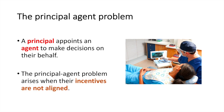The principal-agent problem arises when the agent has differing incentives to the principal. If you visit the dentist, you may want them to take care of your teeth at the lowest price possible, but the dentist has an incentive to earn revenue and make more than the minimum from you. This does not mean that every dentist is out to take your money, but it does mean there is a possible misalignment of incentives. This is one reason why individuals will often seek out online reviews or the opinions of friends and family before working with a dentist.